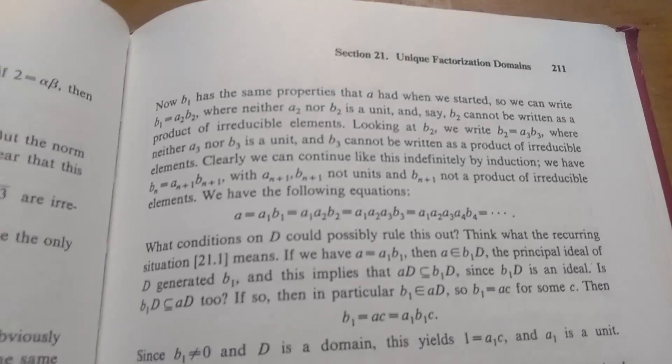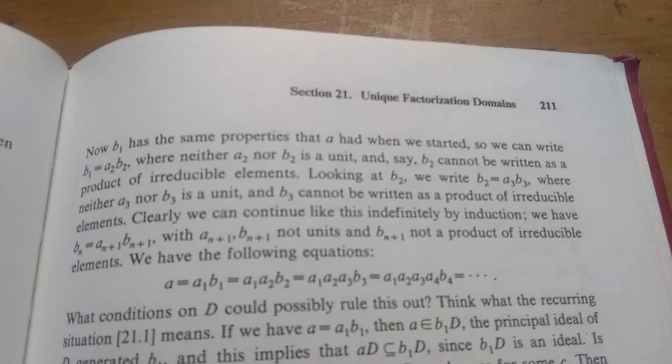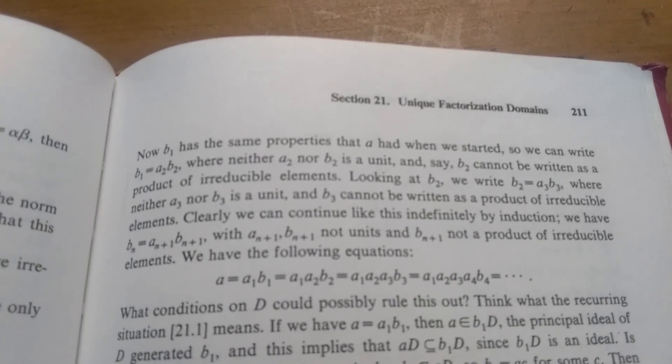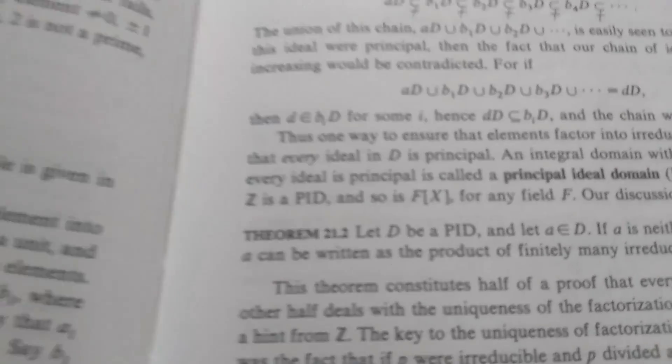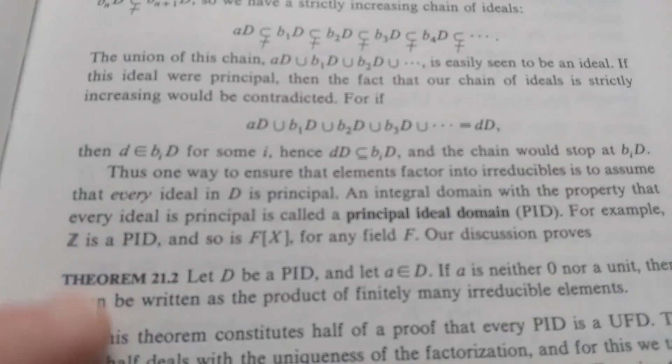For example, this is the last section in the book, I believe, section 21. It's on unique factorization domains, otherwise known as UFDs. So he does mention PIDs here, at the end, principal ideal domains.